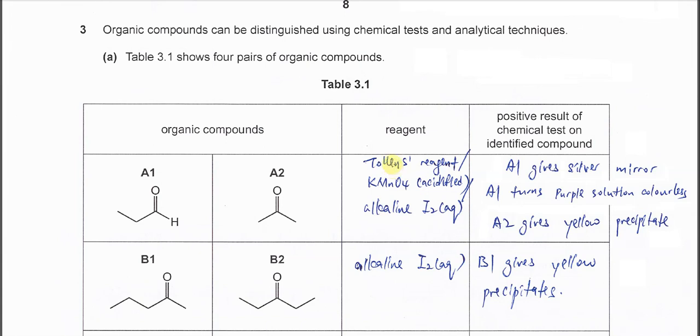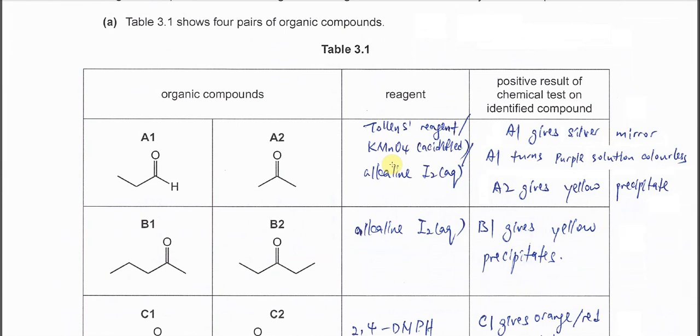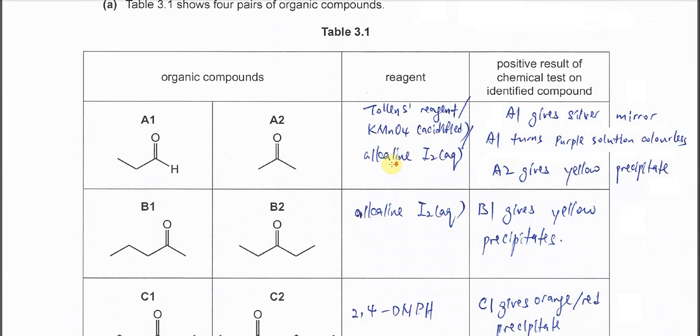Question 3 part A. Complete table 3.1. We have A1, A2. A1 is aldehyde, A2 is ketone.